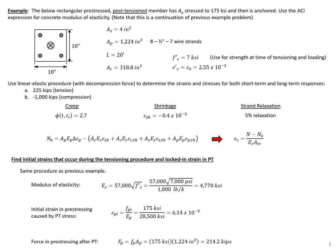In this example problem, we're going to use our linear elastic procedure using the decompression force concept to determine the strains and stresses for both short-term and long-term responses under a 225-kip tensile load and negative 1,000-kip compression load. This is a continuation of previous example problems, so we're using the same cross-section: a rectangular or square column, 18 by 18, with a given area of non-pre-stressed steel, an area of pre-stressed steel, and an area of concrete. We have a 7 ksi compressive strength, a creep coefficient, a shrinkage strain, and 5% strain relaxation.